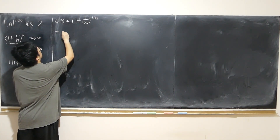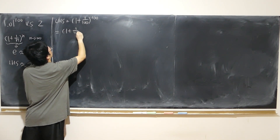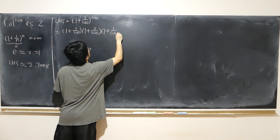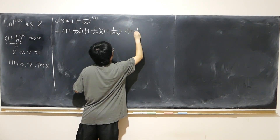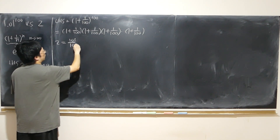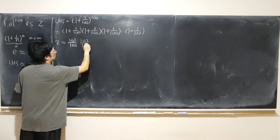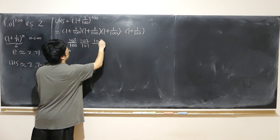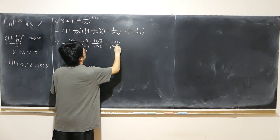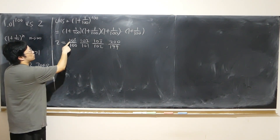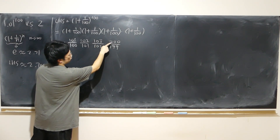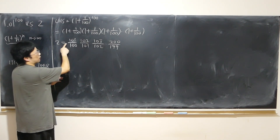So let me rewrite: the left-hand side is (1 plus 1 over 100)^100. At the same time, 2 can be written as (101/100) × (102/101) × (103/102) × ... × (200/199). This is a telescoping product — everything cancels, leaving 200 over 100, which is exactly 2.